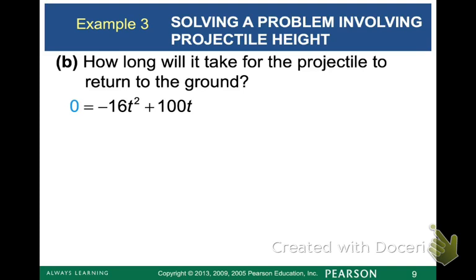This equation is a little bit easier to solve. I can just start by pulling out a GCF. The GCF I'm going to pull out is a negative 4T. And now I can use my zero factor property to set each of the parts equal to zero and solve for T.